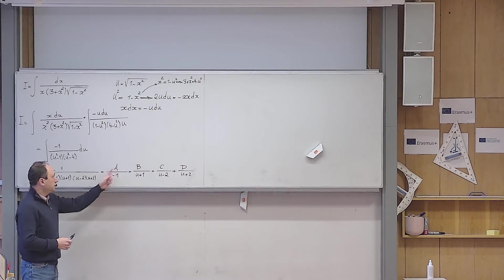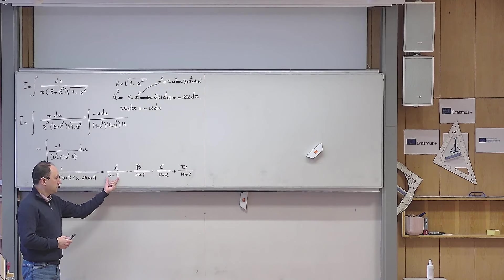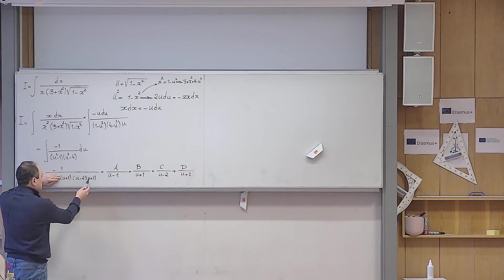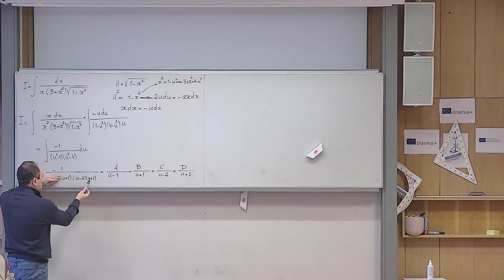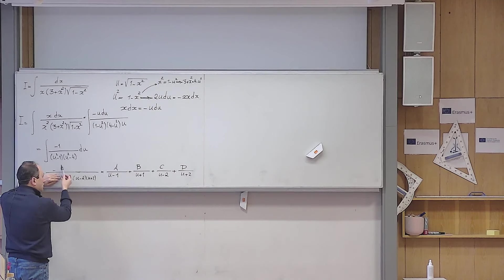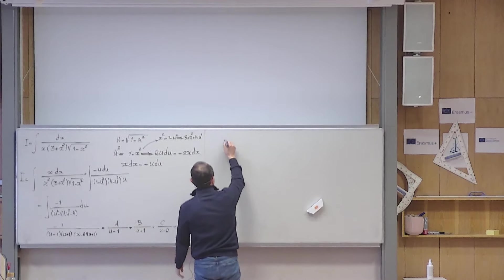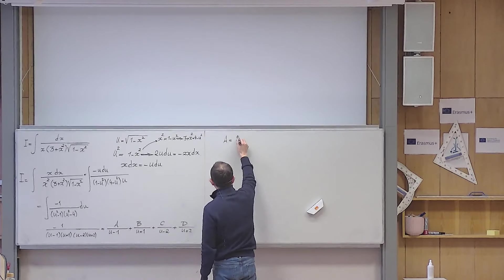For example, to find a, ask yourself what value of u makes its denominator zero — clearly u equals 1. Then take that factor away from the left side and replace u with 1 everywhere. This gives: numerator is minus 1; denominator is (1 plus 1)(1 minus 2)(1 plus 2) equals 2 times minus 1 times 3 equals minus 6. So a equals minus 1 over minus 6 equals 1 over 6.